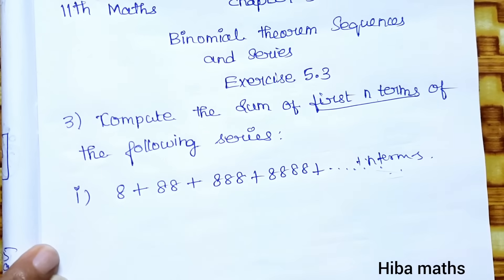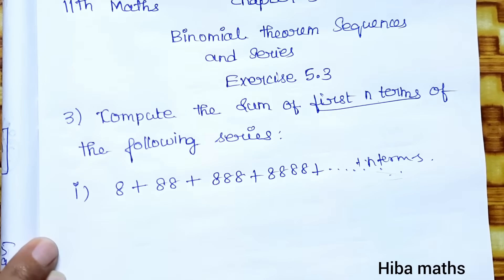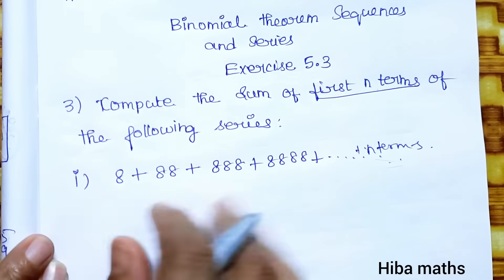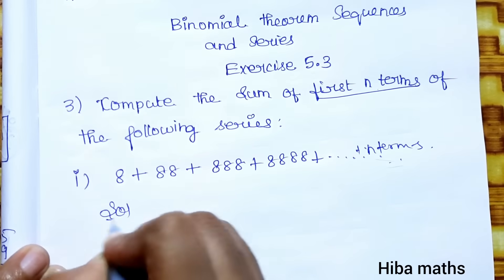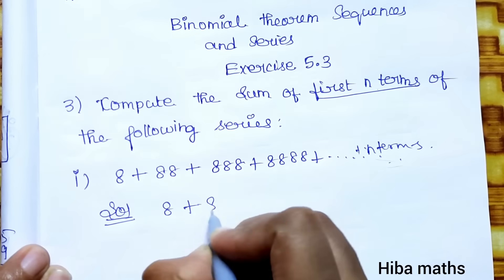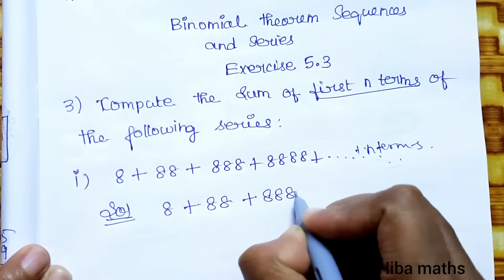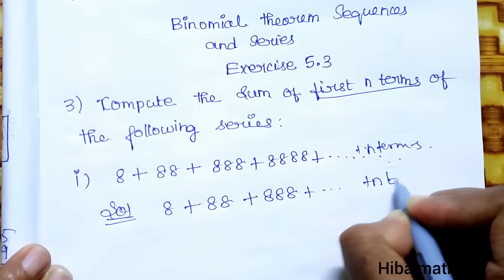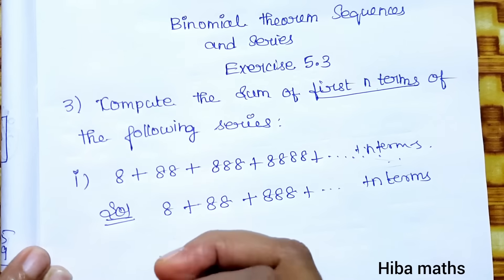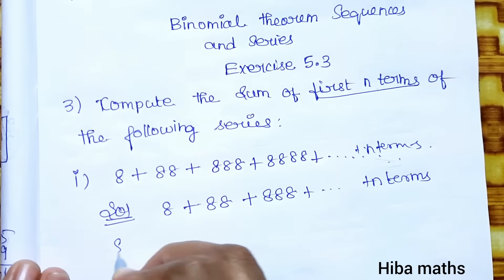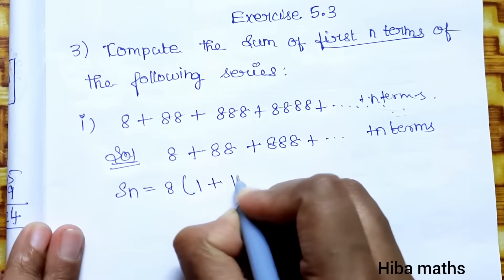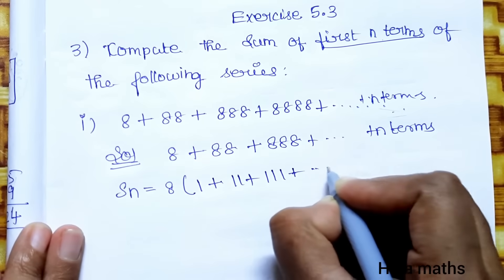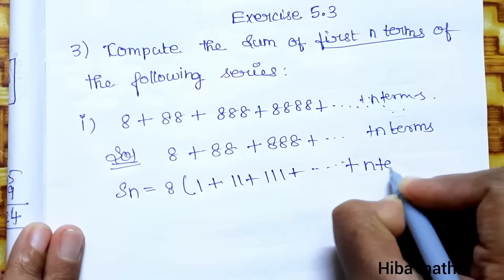Here we will find the sum of the series 8 + 88 + 888 up to n terms. S(n) — we take 8 as common, giving us 8 times (1 + 11 + 111 + ... up to n terms).